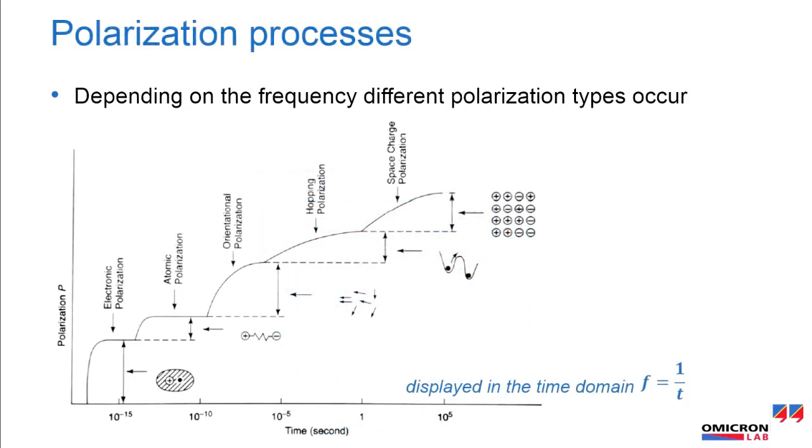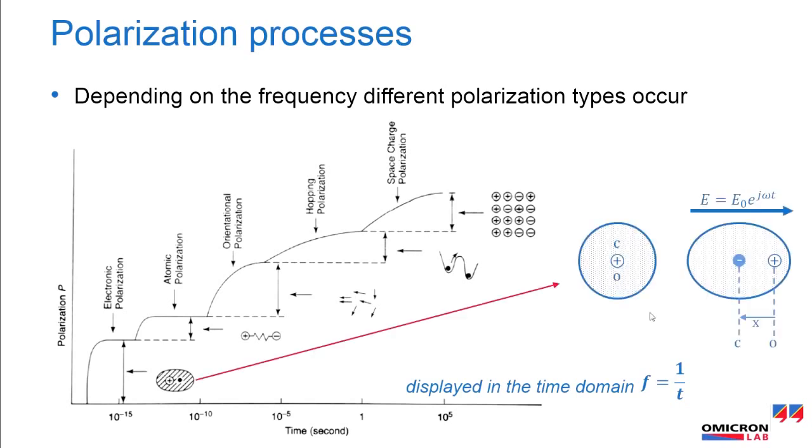Depending on the frequency, different polarization phenomena occur. Electronic polarization or deformation of the electronic shell occurs due to the displacement of positively charged nucleus and negatively charged electrons in opposite directions when an external field is applied, and thereby a dipole moment is created in the dielectric material.